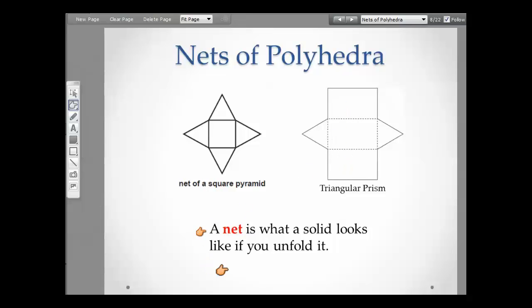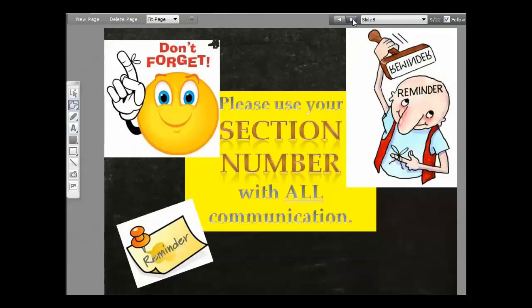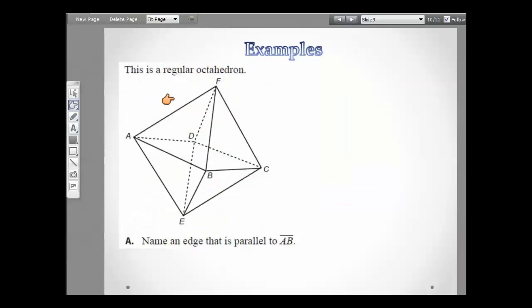A net is what a solid looks like if you unfold it. So if you took a box and you unfolded it and laid it out on the ground, that's the net of the box. And please, whenever you're communicating with me, give me your section number and your class, like 202B section 1 or section 2.